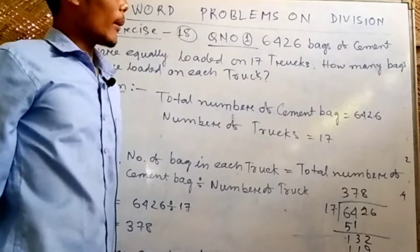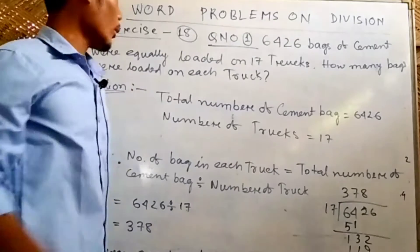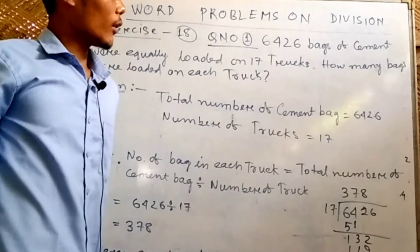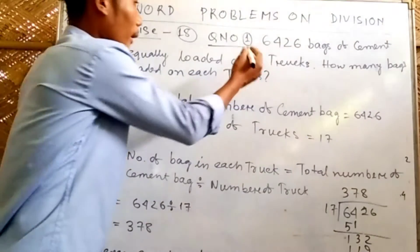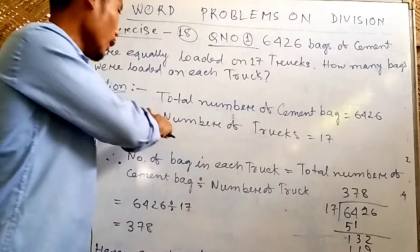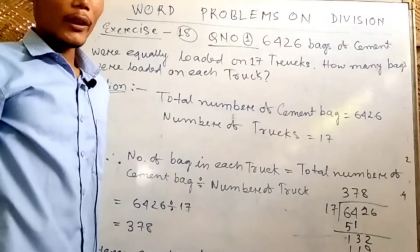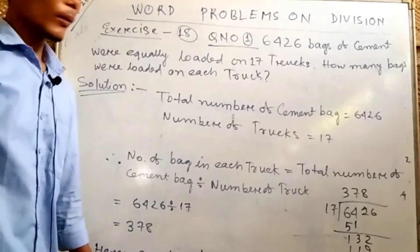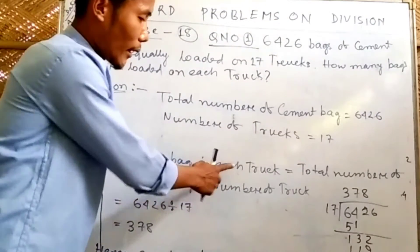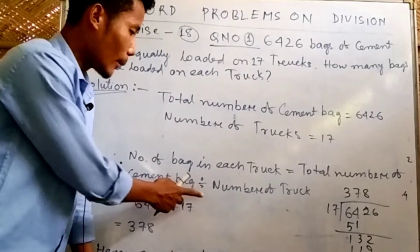The total number of cement bags is 6426, equally loaded on 17 trucks. What is the number of bags in each truck? We divide the total number of cement bags by the number of trucks.